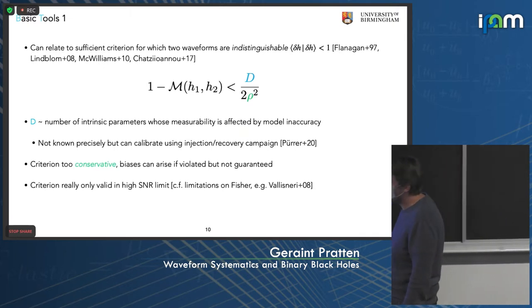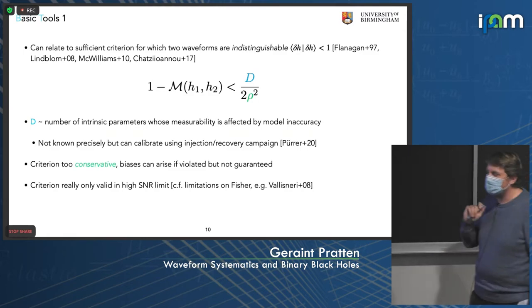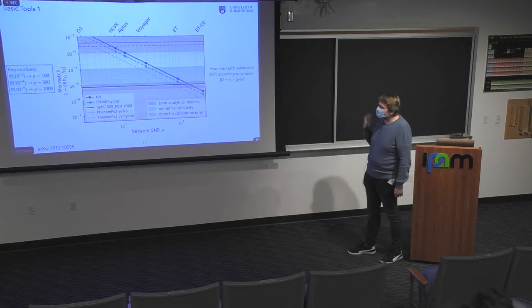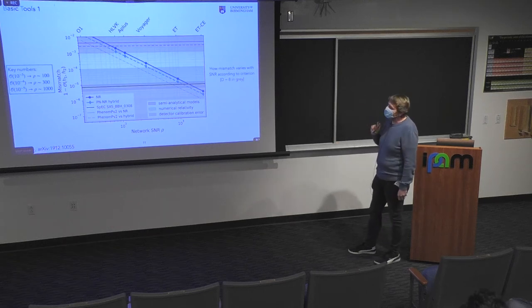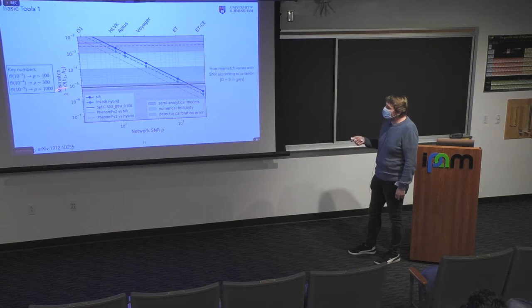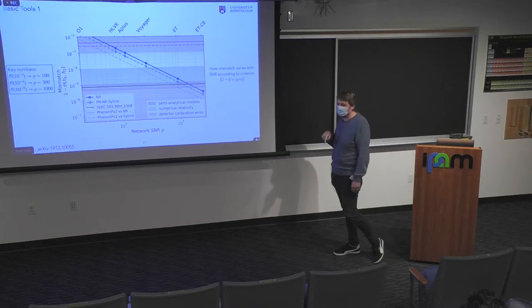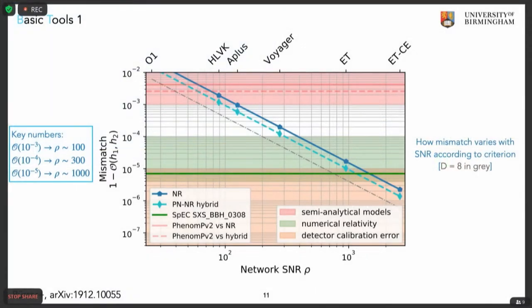This plot by Michael Pürrer and Carl-Johan Haster looked at IMRPhenomD v2 as a semi-analytical waveform model against NR-PN hybrids, and shows how the mismatch varies with SNR according to the distinguishability criterion. The key things to take away: we're approaching the HLVK phase where we see binaries with SNRs on the order of tens — 10, 20, 30. In the near future we'll start seeing SNRs pushing towards 100. Eventually with A+ we expect to regularly see binaries with SNRs exceeding 100. Then with 3G detectors the SNRs become terrifyingly large, perhaps on the order of 1000+.